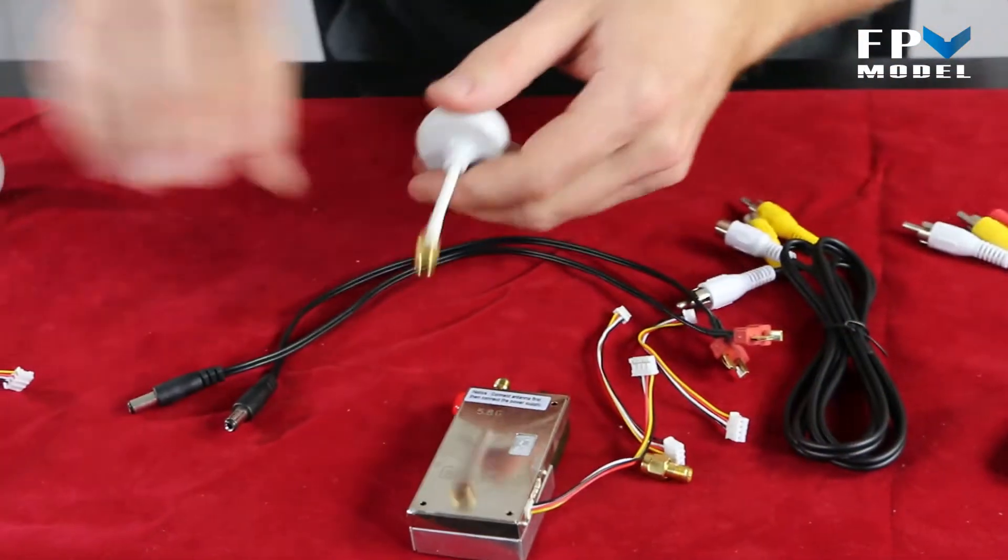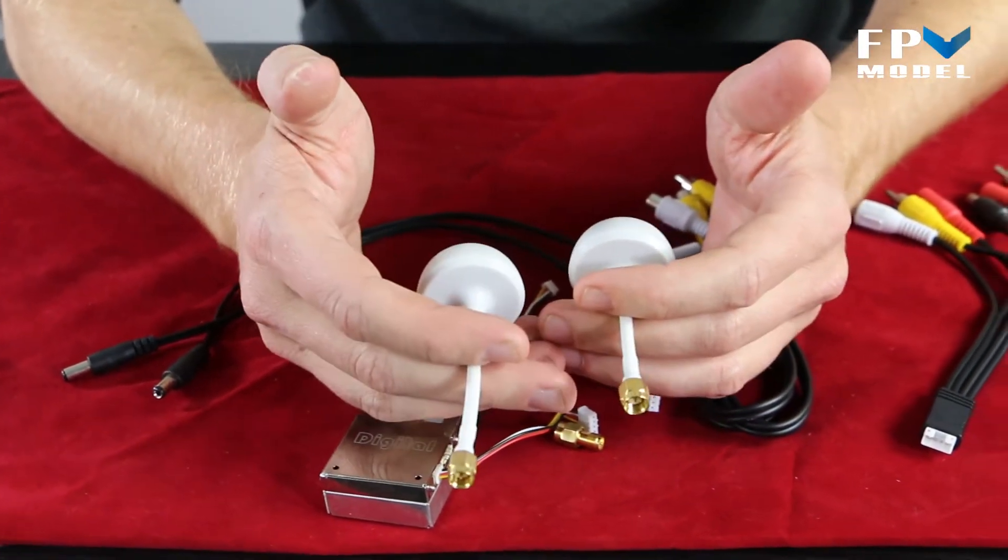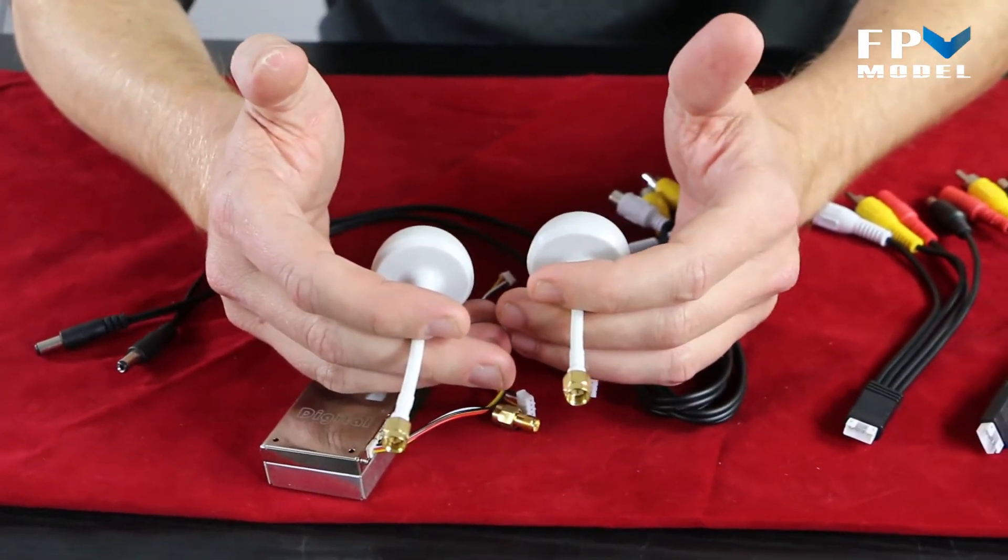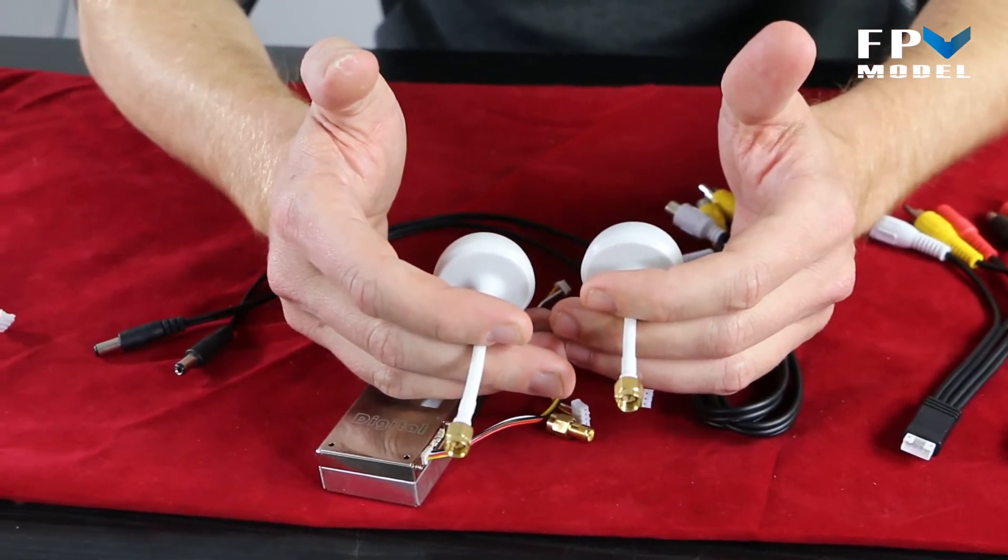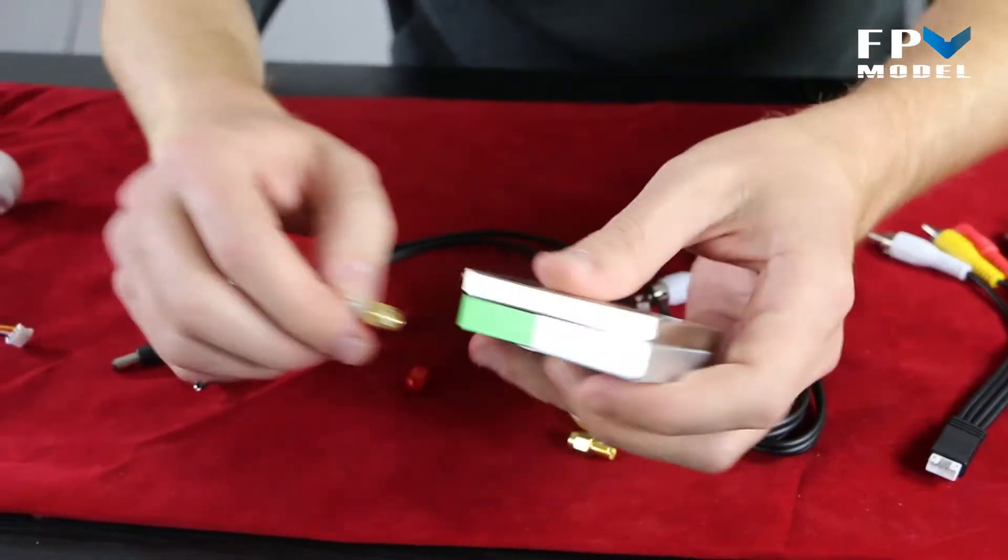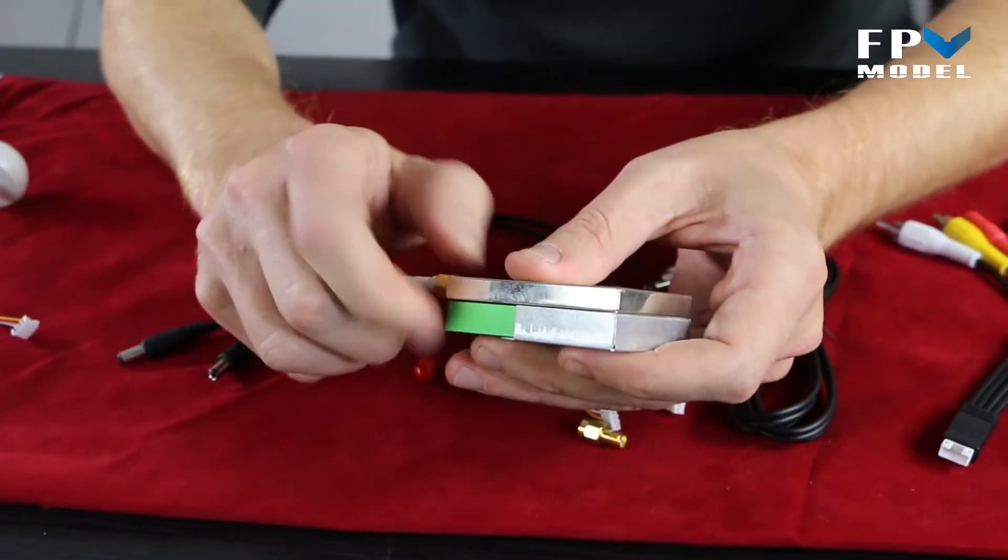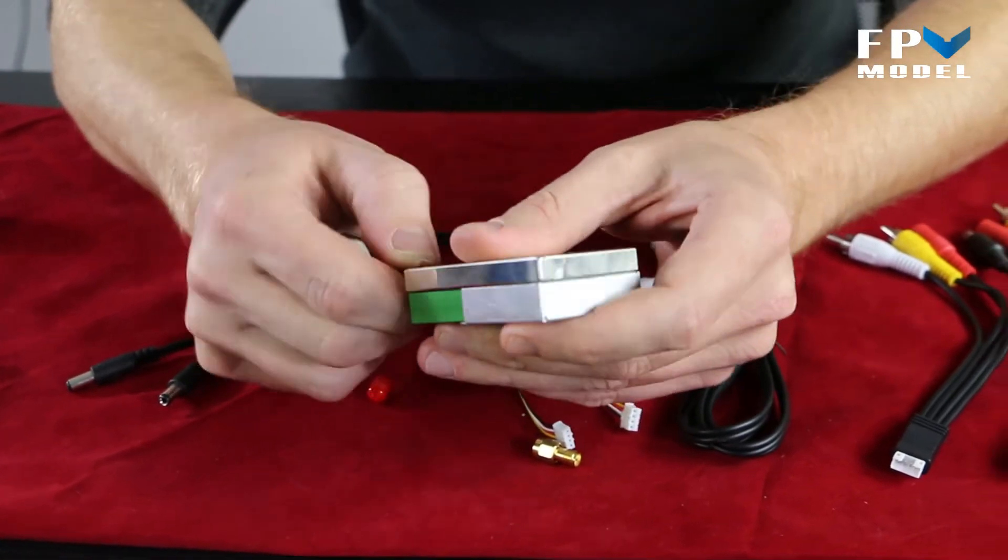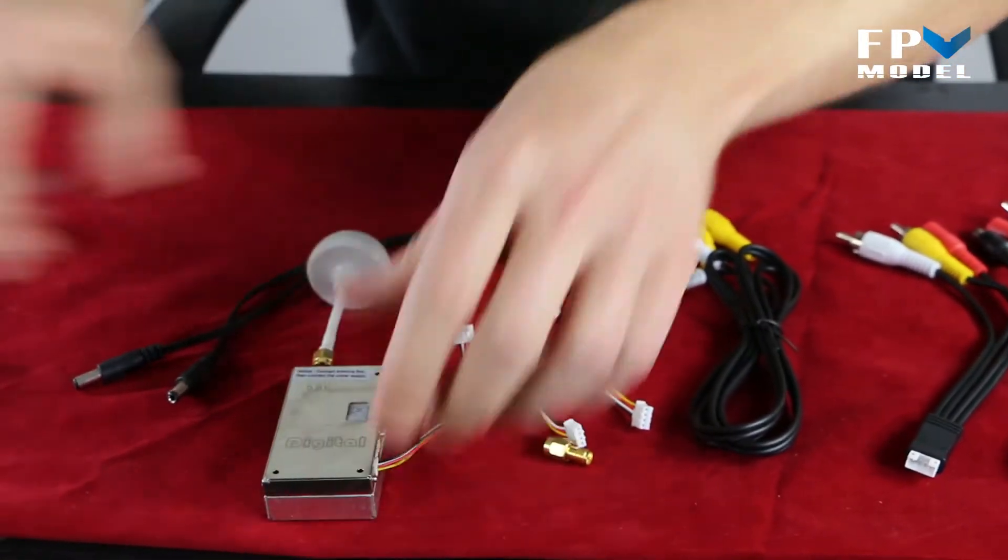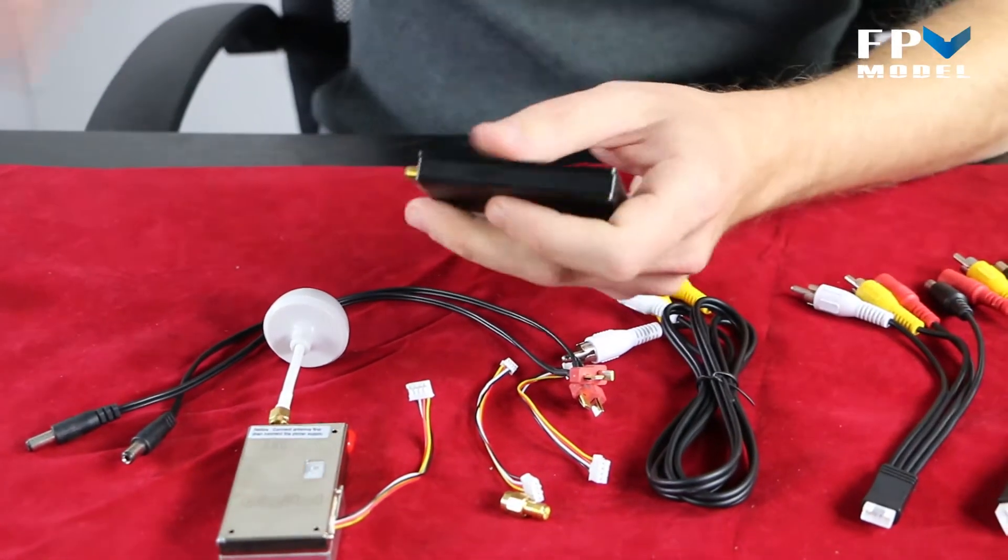Now, if you take a quick look, there are two antennas that come in the package. One is longer, one is shorter. The shorter antenna is for the video transmitter. So, let's go ahead and connect the transmitter antenna to the video transmitter. After that, let's go ahead and connect the receiver antenna to the receiver.